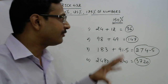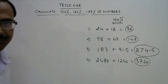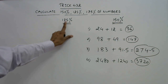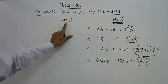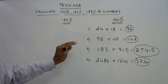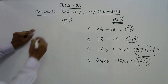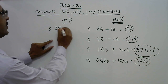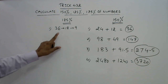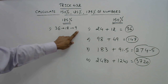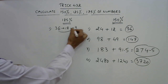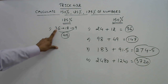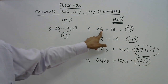Now let's find 125%. You must be aware that 25% of a number is one quarter — that is, you take half twice. For example, 25% of 36: half of 36 is 18, half of 18 is 9. That 9 is 25% of 36. Now add 36 plus 9 to get 45 — that is 125% of 36.